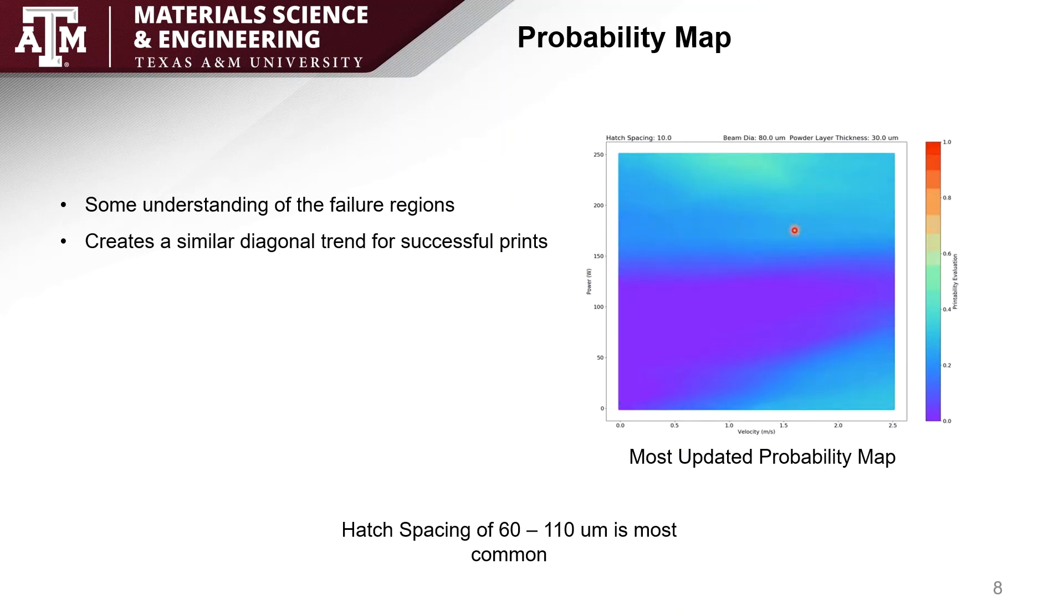You can also see that the lines are mostly continuous. This is good because this means that our model is more generalized and not overfit on the data that we have.